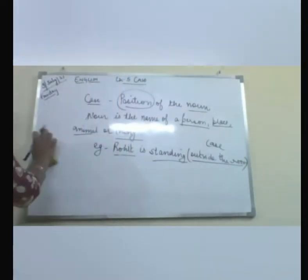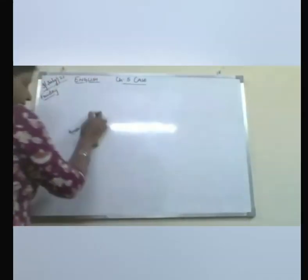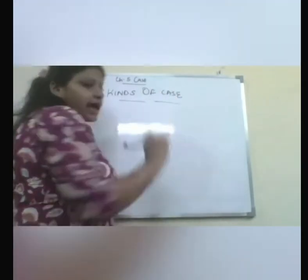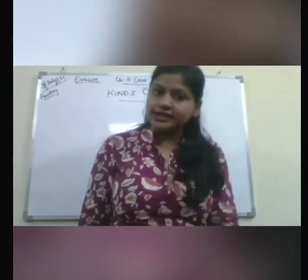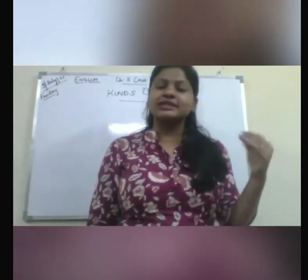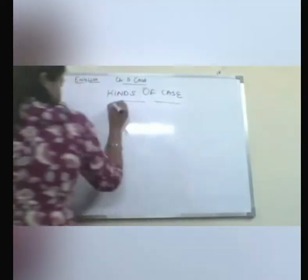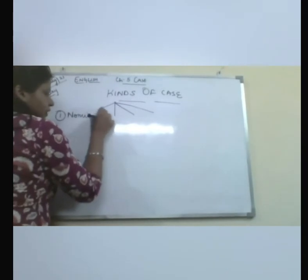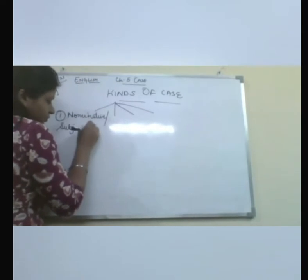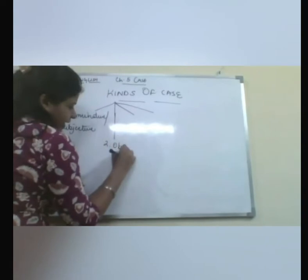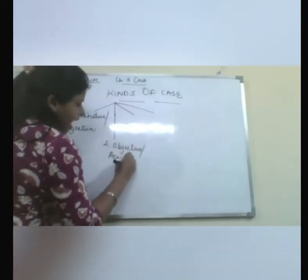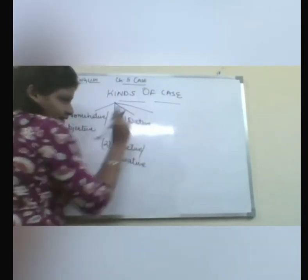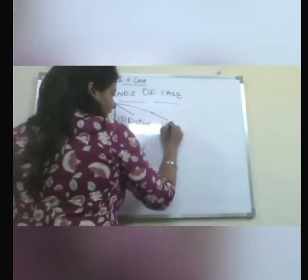Let's move on to the further topic — the kinds of case. Basically there are five kinds of case, but in your syllabus we will read only four kinds, because the fifth is out of syllabus or for higher classes. So there are four kinds of case we are going to read. The first will be nominative, the second case will be objective or accusative, the third case does not have a secondary name, and the fourth case will be possessive.